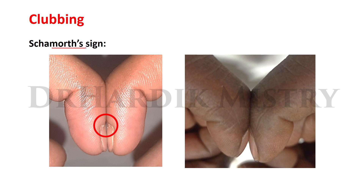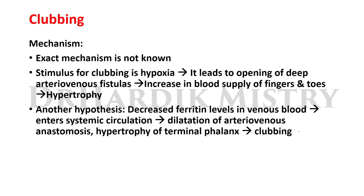This is Schamroth's sign. Normally, when right and left fingers are placed together, a space is visible between the two fingers. In clubbing, this space is absent — that is Schamroth's sign. The absence of the space between two fingers is specifically present in conditions of clubbing.